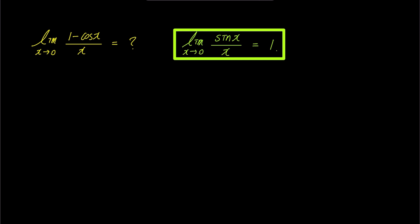First, by multiplying both the numerator and the denominator by 1 plus cosine x, the limit becomes the limit of 1 minus cosine x over x times 1 plus cosine x over 1 plus cosine x.